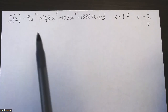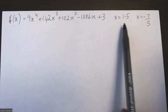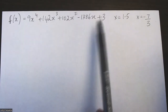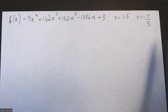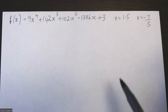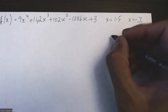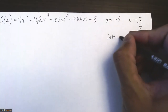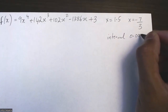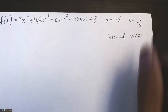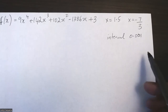In this video, we want to determine whether these two values of x for this function are either going to be a maximum or a minimum, and we want to use instantaneous rate of change to prove this. We're going to use an interval of 0.001, but you could use different values like 0.1 or 0.01 depending on your class.